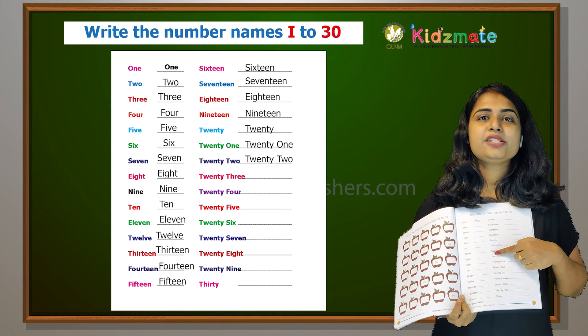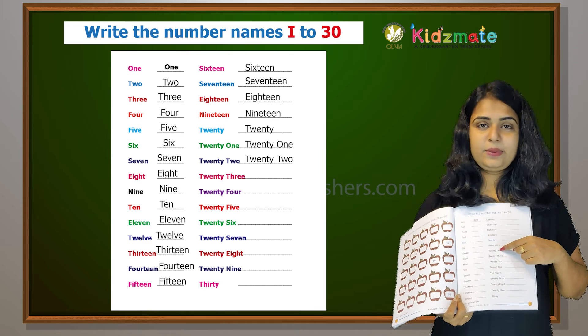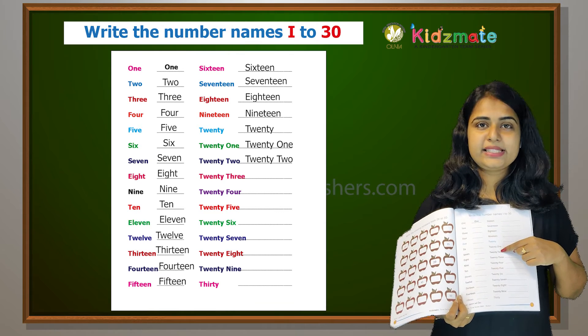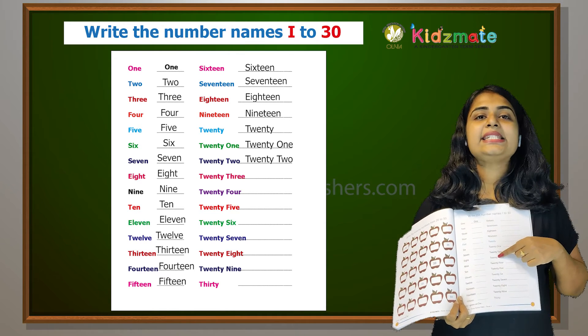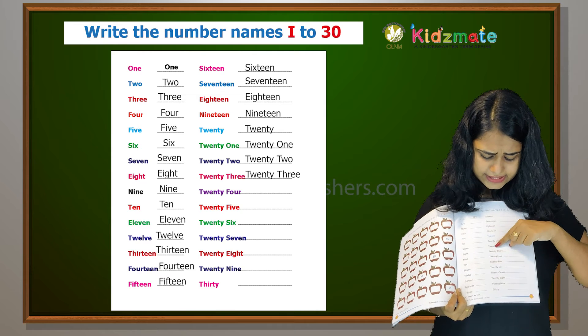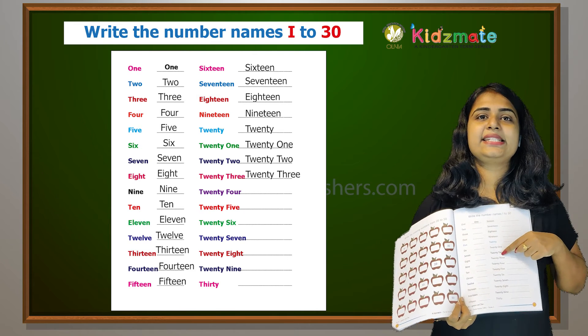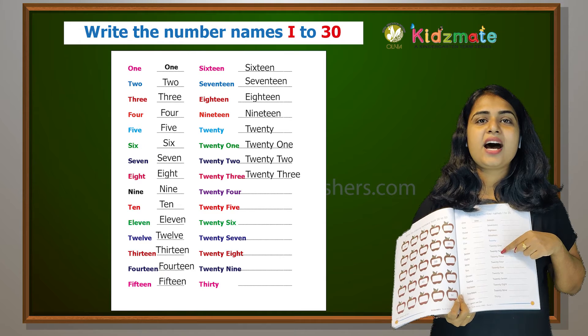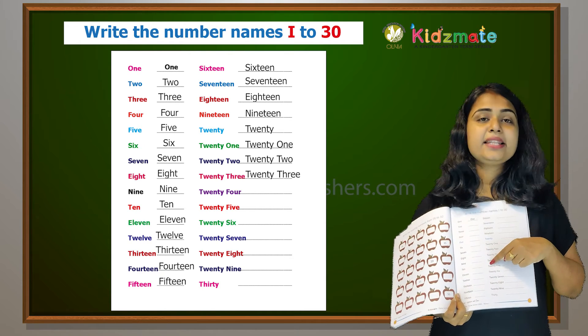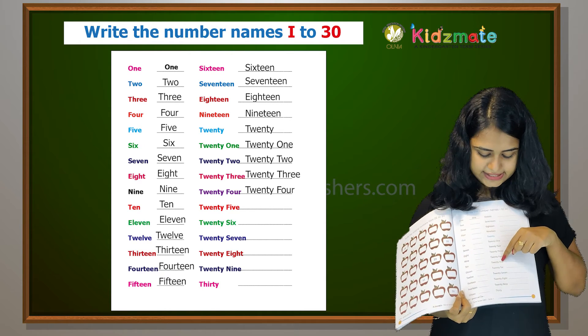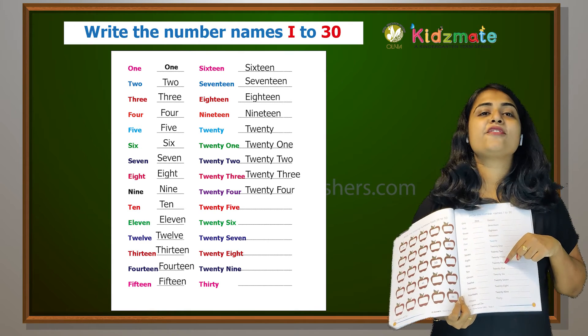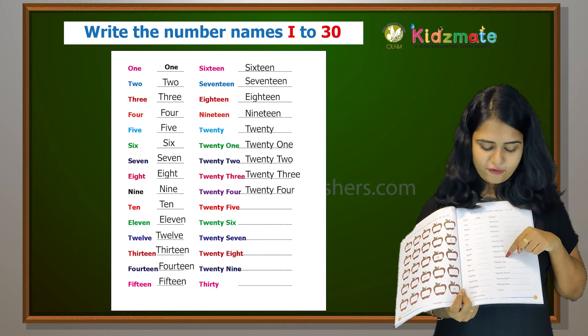Twenty-two, T-W-E-N-T-Y and T-W-O, twenty-two. Then twenty-three, T-W-E-N-T-Y and T-H-R-E-E. Twenty-four, T-W-E-N-T-Y and F-O-U-R, twenty-four.